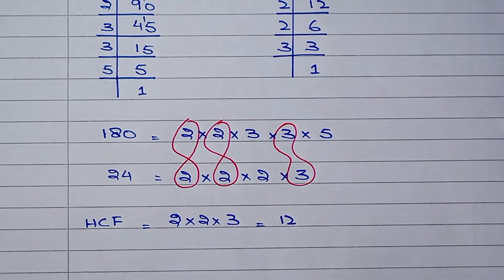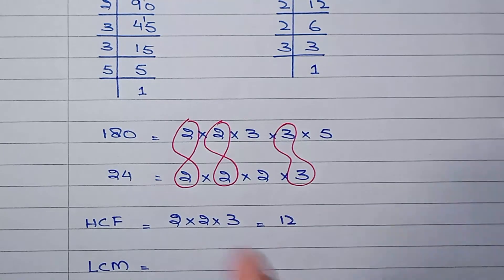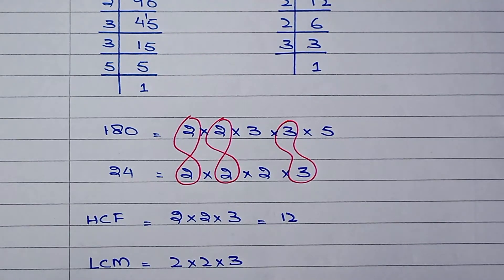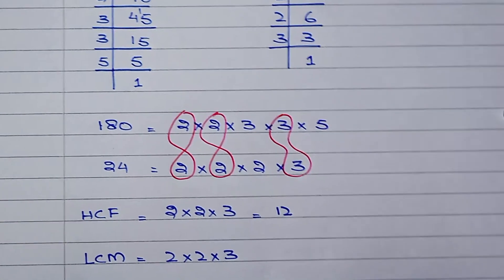Now let me find the LCM. For LCM we need to write down the common numbers once. So 2 times 2 times 3, these are the common factors. Then we need to write down the uncommon factors. What are the remaining factors?